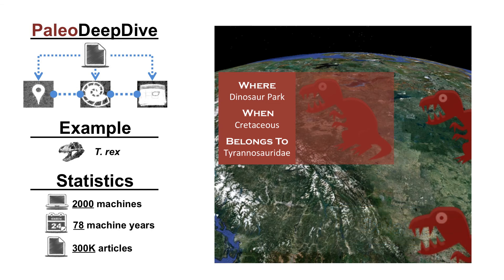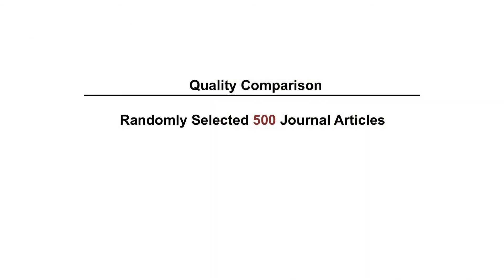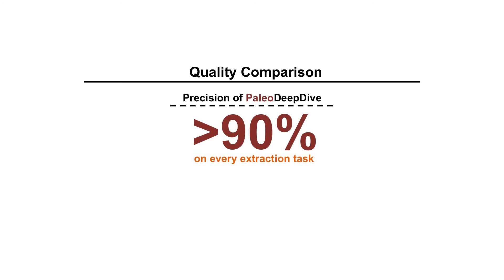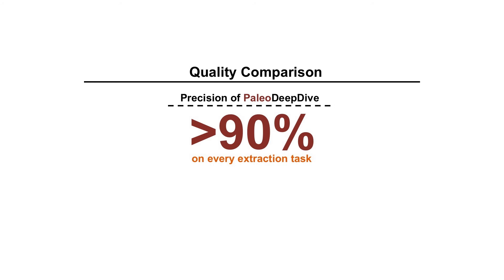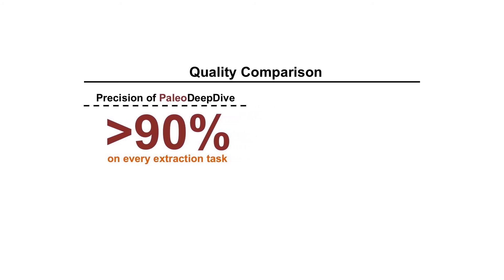To compare the extraction quality, we randomly selected 500 journal articles. With our geoscientist collaborators, we evaluated the quality of Paleo Deep Dive compared with PaleoDB. We found that Paleo Deep Dive had a precision of more than 90% on all extraction tasks. Surprisingly, on some tasks, Paleo Deep Dive even achieved higher precision than human volunteers.